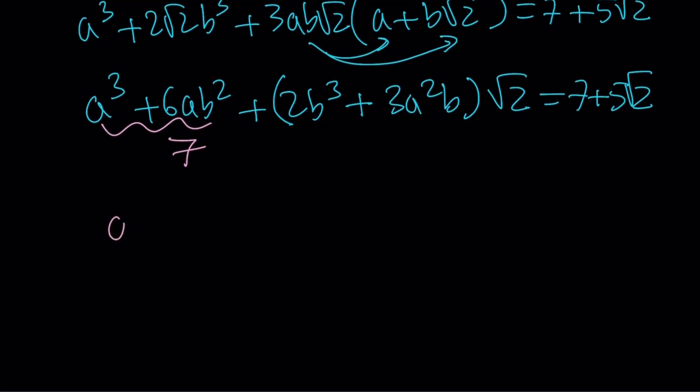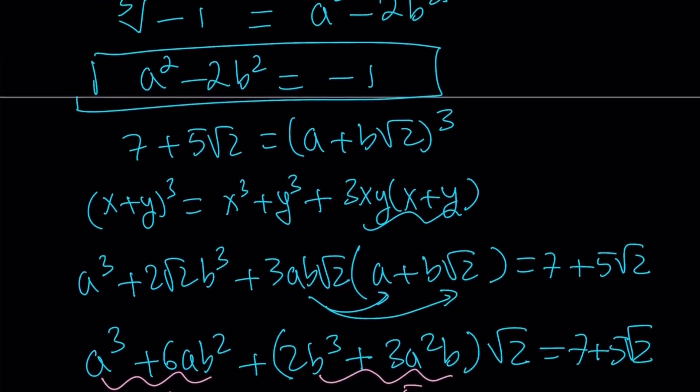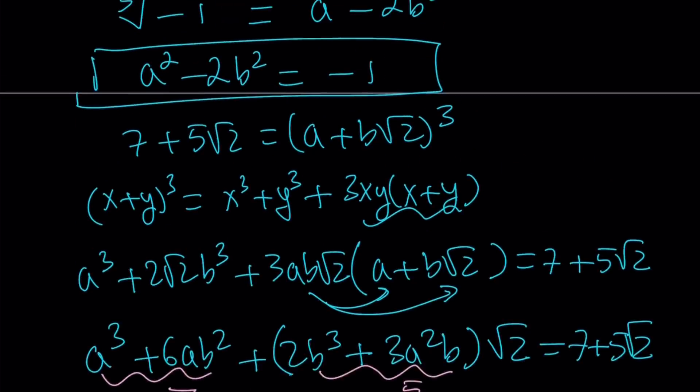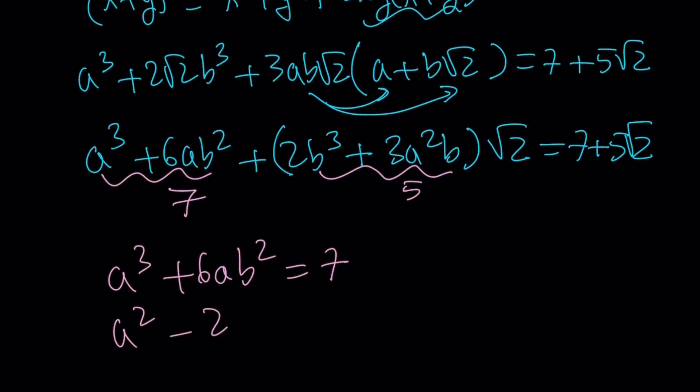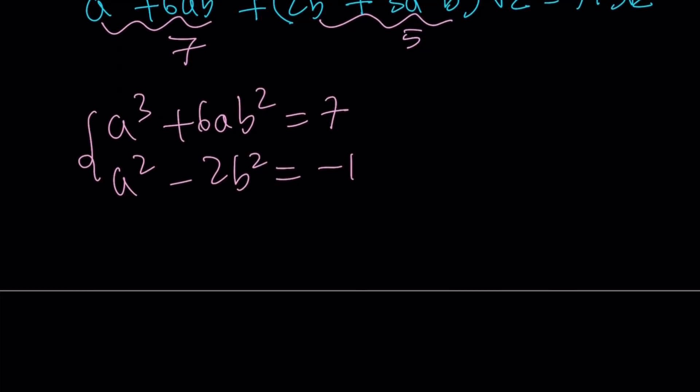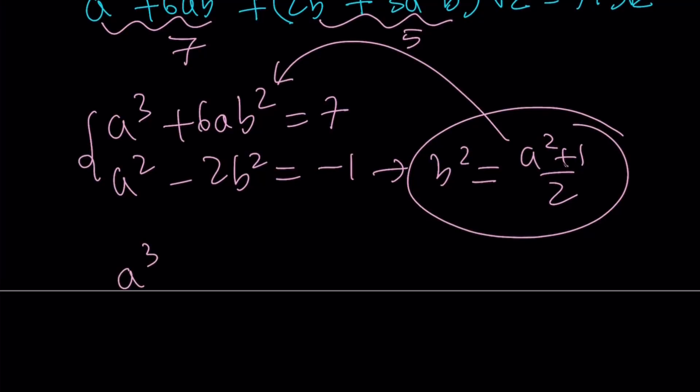Now I want to use that a cubed plus 6ab squared equals 7. Of course you could also set this equal to 5 and solve it as a system as I said earlier, but that's going to be more time consuming. So let's go ahead and use the previous equation that we got by multiplying: a squared minus 2b squared equals negative 1. From here I want to isolate b squared and write it as a squared plus 1 divided by 2, and then I want to plug it in here. Let's go ahead and do that easy. A cubed plus 6a multiplied by a squared plus 1 over 2 equals 7.